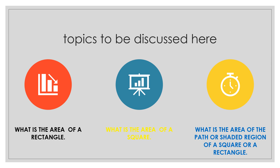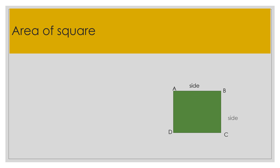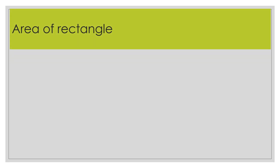What is the area of a square? You can see the figure of a square with four vertices: capital A, capital B, capital C, and capital D. All sides are equal in a square. AB is a side, BC is a side, CD is a side, and AD is also a side. The area of a square is equal to side multiplied by side.